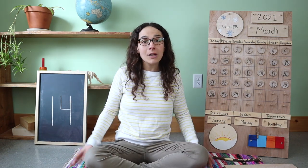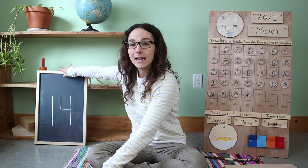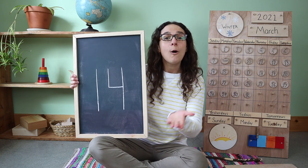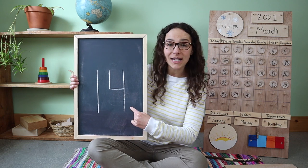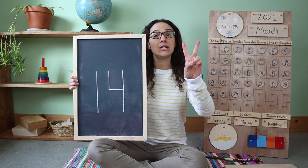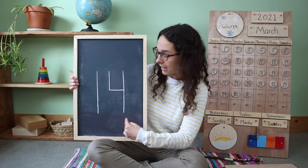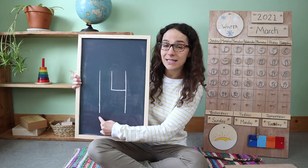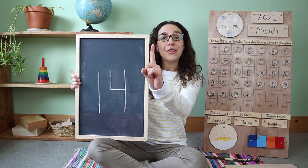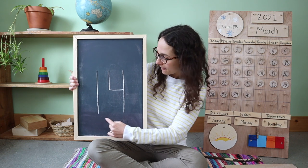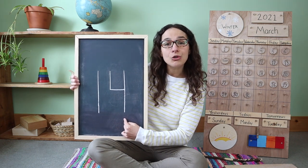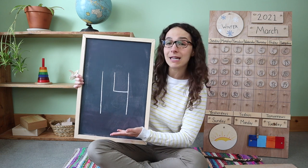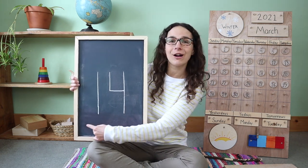Now we also have a new number to talk about this week. Take a look at this double-digit number — do you know what number this is? 14. You're right — this is the number 14. Now 14 is a double-digit number because when you write it, you have to write two numbers. First you write the number one, and after that you write the number four. So when you write the number 14, you write the numbers 1, 4 — fourteen.